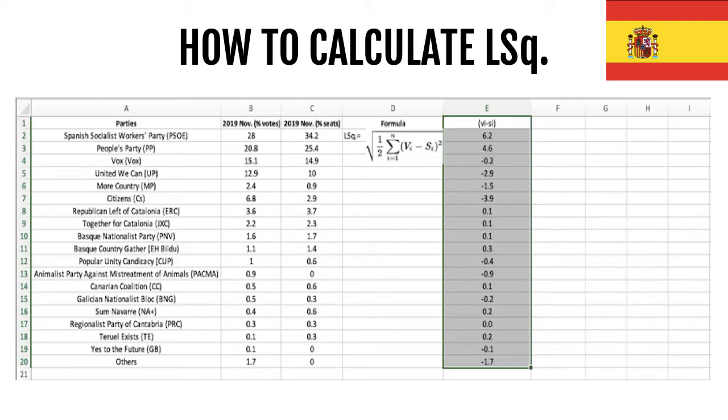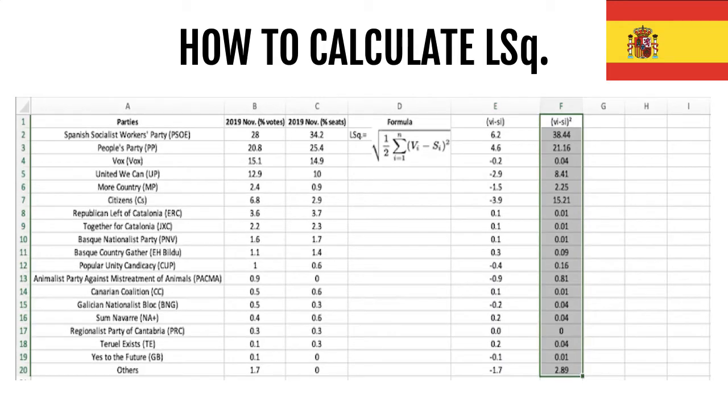Once we have calculated the difference in the percentage of votes and percentage of seats, then we have to square them. So 6.2 squared is 38.44, 4.6 squared is 21.16, and so on for every single party or coalition.